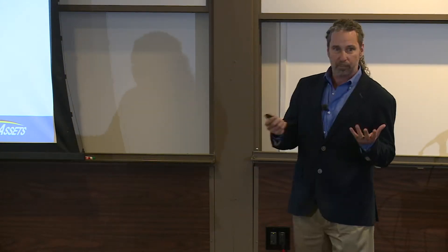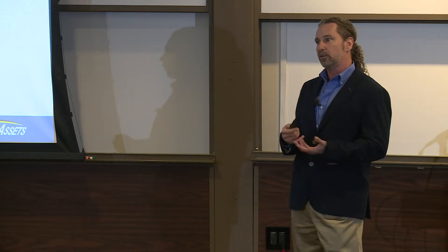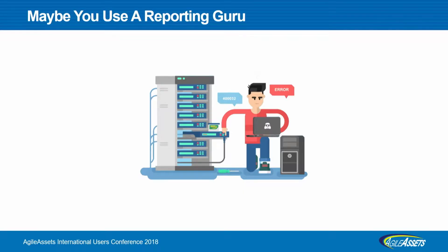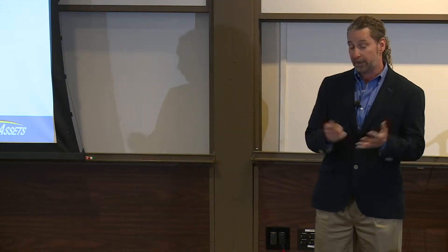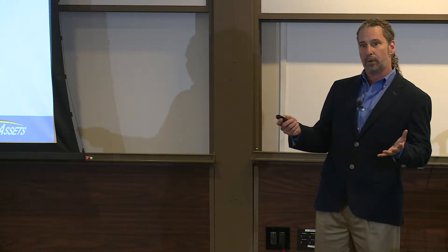And then there's the reporting guru. Sometimes the guru is just another person who has a natural affinity to write reports — they're good at it. When you're good at it, people say 'Can you help me?' Or an agency will make an investment in a business intelligence tool, and since it's not effective to train every single person, they choose one person who becomes the reporting guru.